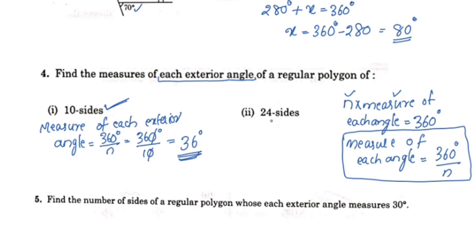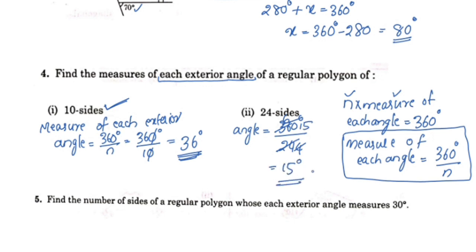Now we have 24 sides. We will measure the exterior angle of a regular polygon with 24 sides. The measure of each exterior angle is equal to 360 degrees divided by n, which is 360 ÷ 24. Cancelling, the measure of each exterior angle is equal to 15 degrees.